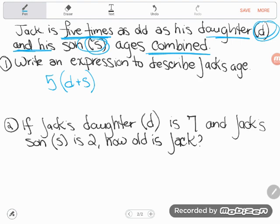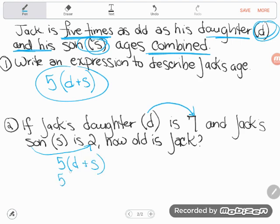Number two is asking you to evaluate that expression for certain numbers. If Jack's daughter D is 7 and Jack's son S is 2, how old is Jack? We said we'd use this expression to figure out how old Jack is. Let's write it down and put in what we know. The D is 7 and the S is 2. Now we can simplify this expression. I need to hit the grouping first. Seven plus two is nine, and now I can do the multiplication. Five times nine is 45, so Jack is 45 years old.